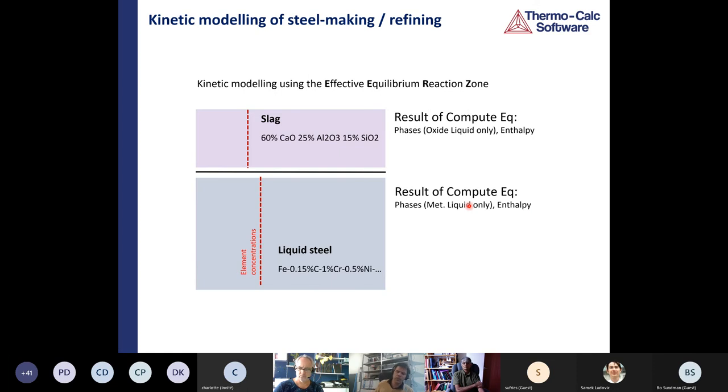I'll skip these for time reasons. What I've shown up to now is equilibrium calculations. These are very important to get a fundamental understanding of what's happening. But unfortunately, steel making, steel refining does not reach thermodynamic equilibrium. So how can we introduce kinetics into our calculations?